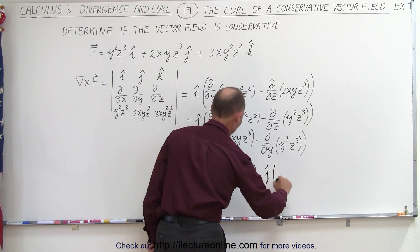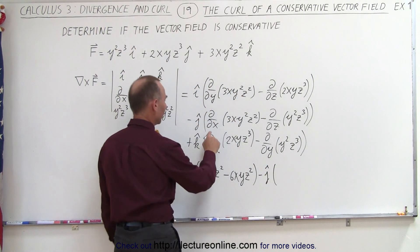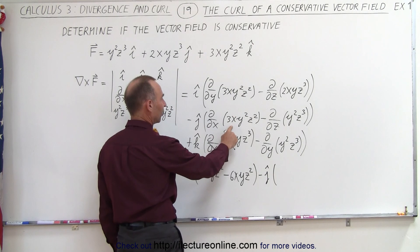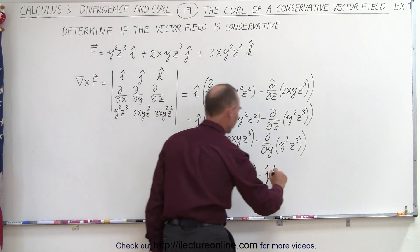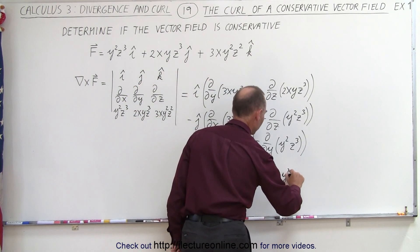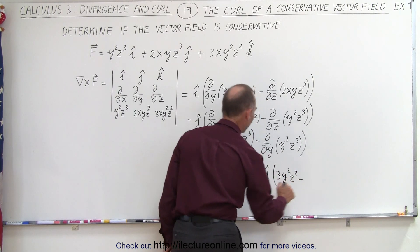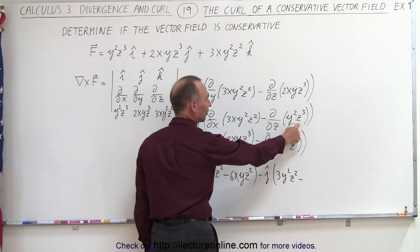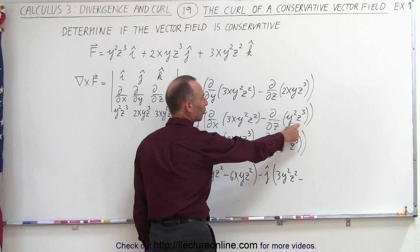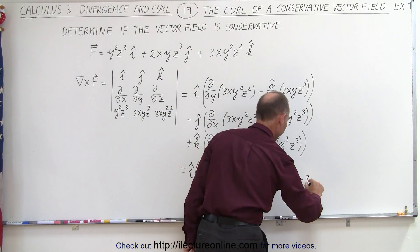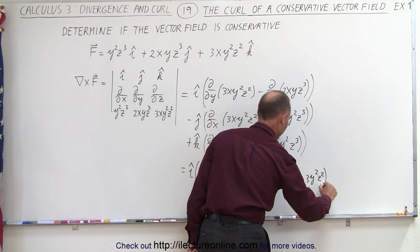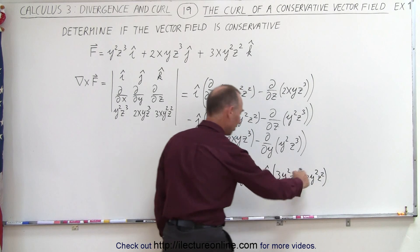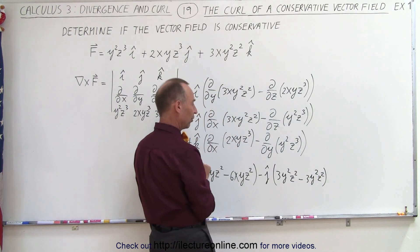Minus j times the partial of 3xy²z² with respect to x gives 3y²z², and the partial with respect to z of y²z³ also gives 3y²z². These cancel as well, so the j component goes to 0.